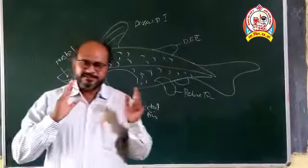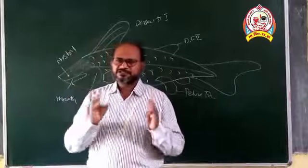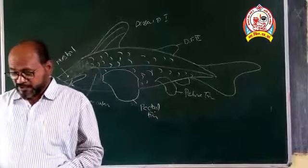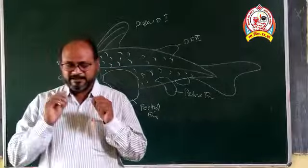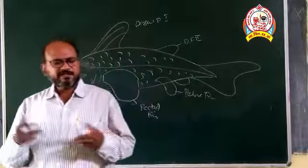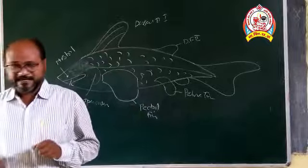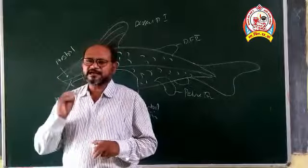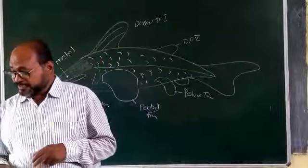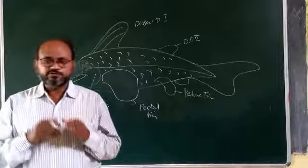Sexes are separate — male and female are separate. Fertilization is external or internal. The female lays eggs in the water, which is known as oviparous. In some species, the eggs are retained on the body of the fish and are nourished there — these are known as viviparous species.